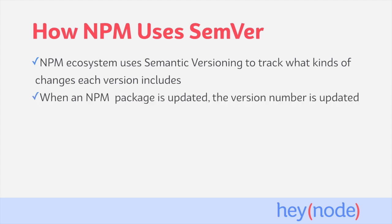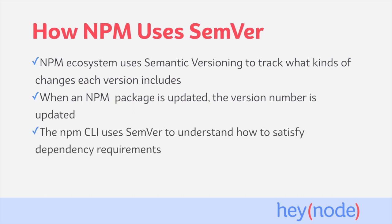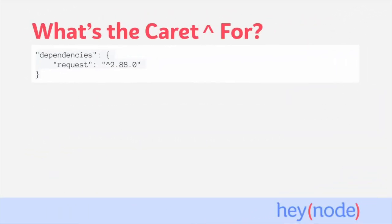Whenever a new version of a package is published to NPM, the package author is prompted to update the version number according to semantic versioning format to indicate what kind of changes occurred. This widely agreed upon system within the NPM ecosystem is what helps the NPM CLI understand how to satisfy the dependencies listed in your package.json with the latest compatible version of a package. When installing a dependency, the NPM CLI prefixes a caret symbol before the version number recorded in package.json.